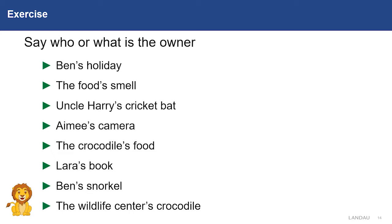Are you ready to check your answers? Let's start. Sentence one: Ben's — so Ben is the owner. Sentence two: food's — so food is the owner. Sentence three: Henry's — so Harry is the owner. Amy's — in this sentence, Amy is the owner of the camera.